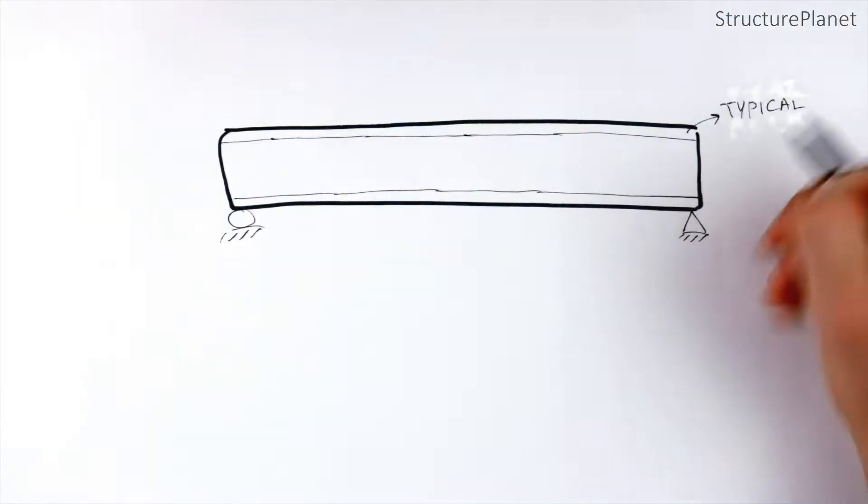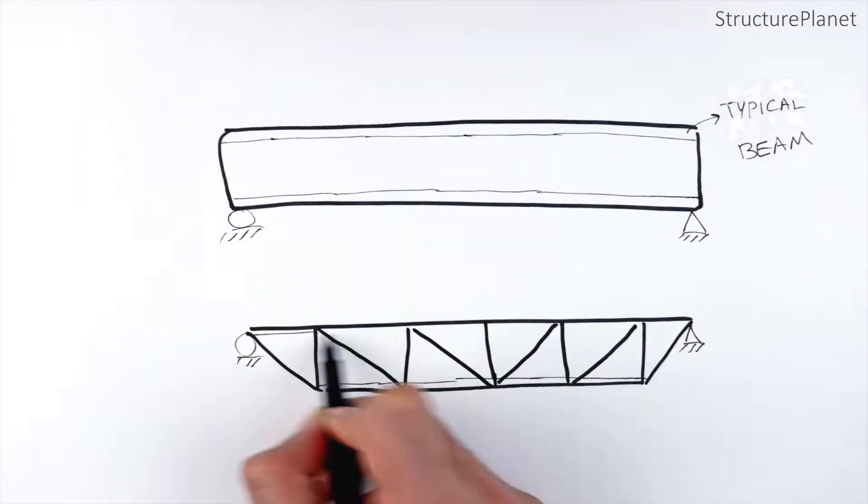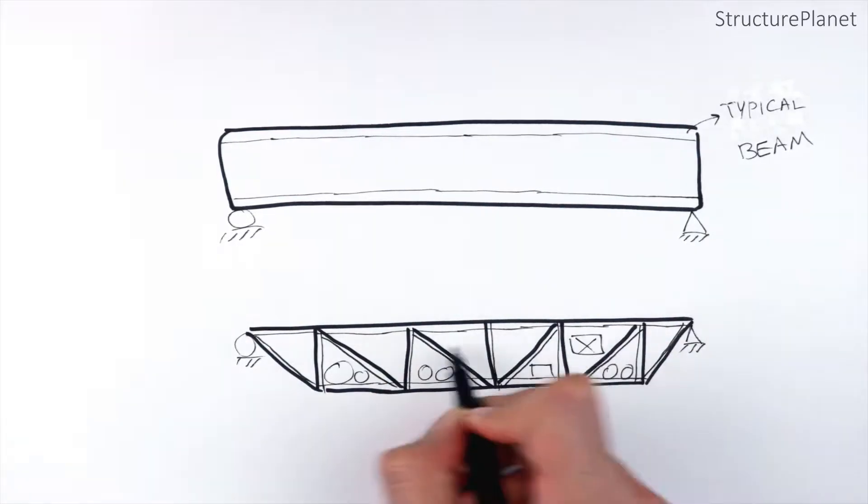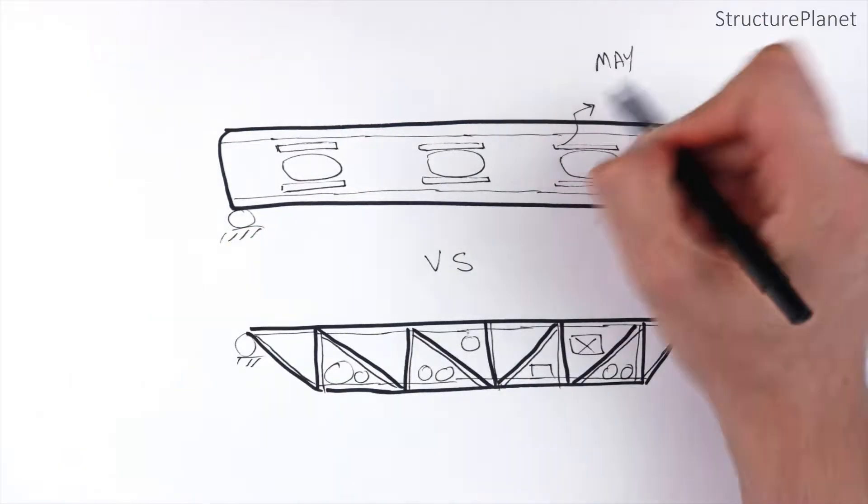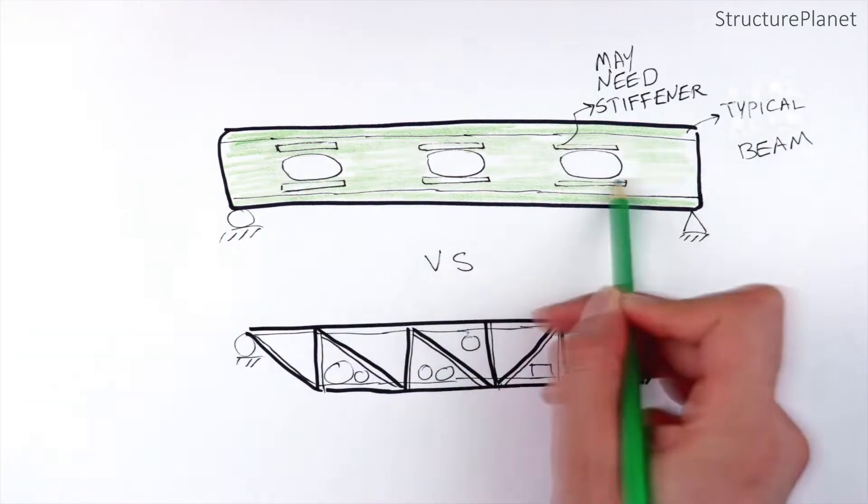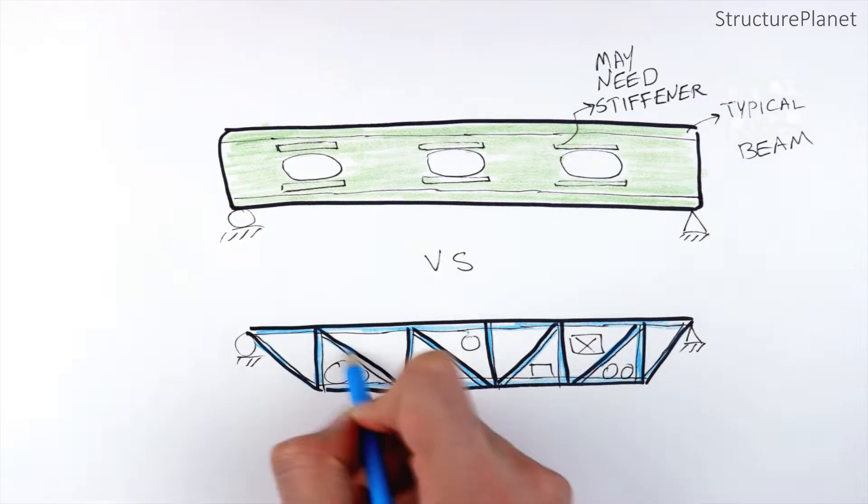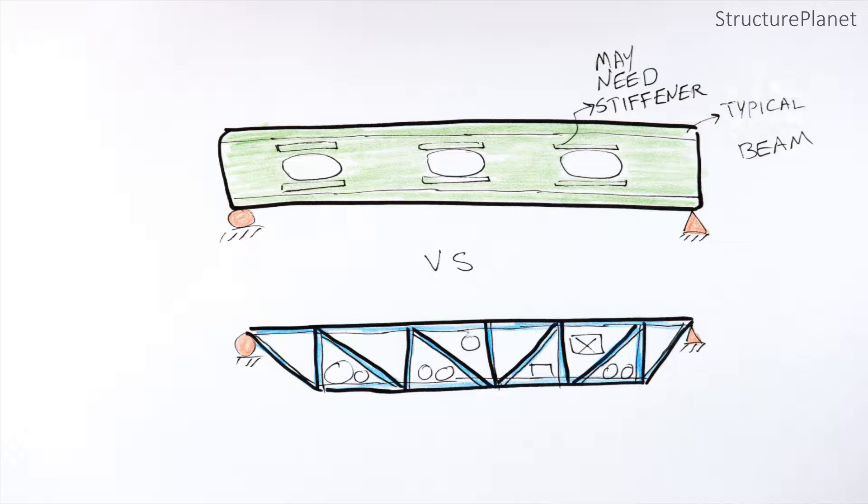One reason for trusses to be efficient is the large number of openings in their webs, which makes them lighter by reducing material usage and lifting costs. These openings are commonly used for mechanical pipes or electrical conduits.